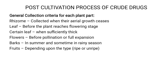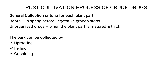When collecting fruits, it depends on whether you need ripened or unripened fruits — the color of the fruit matters. Unripened fruits are collected when they are dark green, before the ripening stage begins. For roots, they should be collected in spring before vegetative growth stops. For unorganized drugs, collection should be done when the particular plant part is matured and thick — for example, for acacia or similar drugs, the stem or wood to be incised must be mature so that maximum constituent yield is obtained.